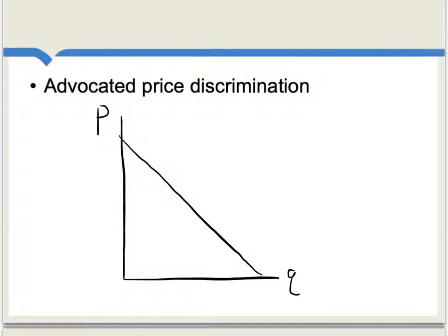Dupuis also had an understanding of what we now call price discrimination, and he argued this could help an economy or a sector reach an optimum. The buyers who value the good most, say on this part of the demand curve, should be paying higher prices. The buyers who value the good at this part of the demand curve should be paying lower prices, and so on down the demand curve with lower prices yet. Dupuis understood that you can arrive at an optimum by charging buyers differential prices depending on how much they value the good or service in question.